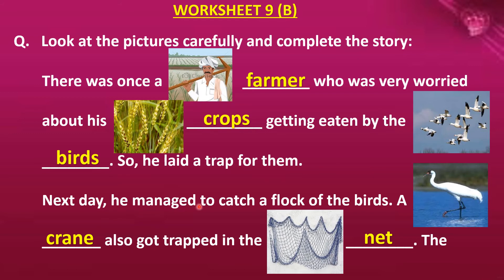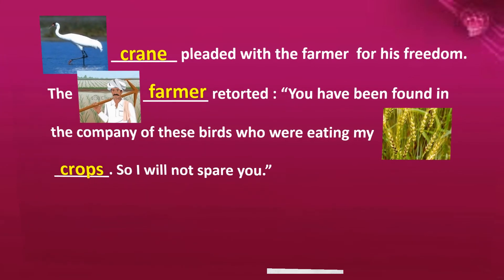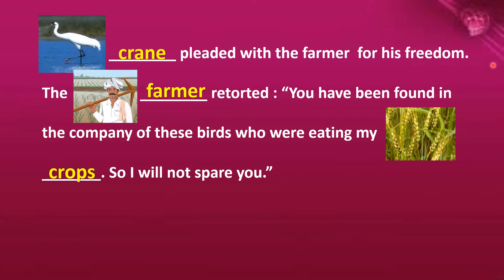Next day, after laying the trap, he managed to catch a flock of birds — flock means a group of birds. A crane also got trapped in the net. When a lot of birds were caught in the net, one of them was a crane. The crane pleaded with the farmer for his freedom — the crane was begging the farmer to leave him free from the trap.